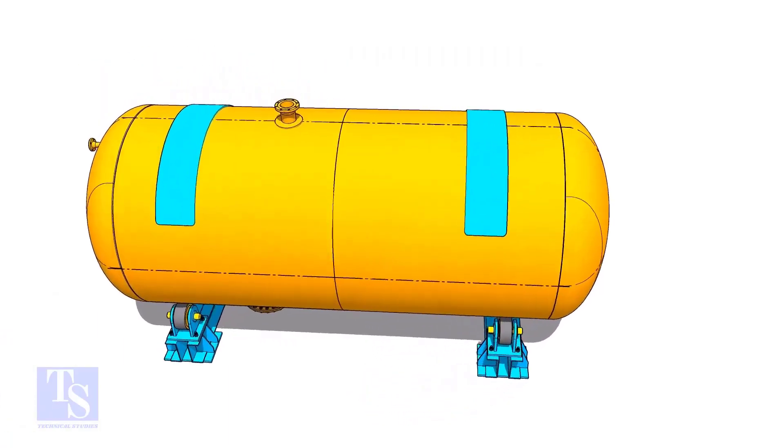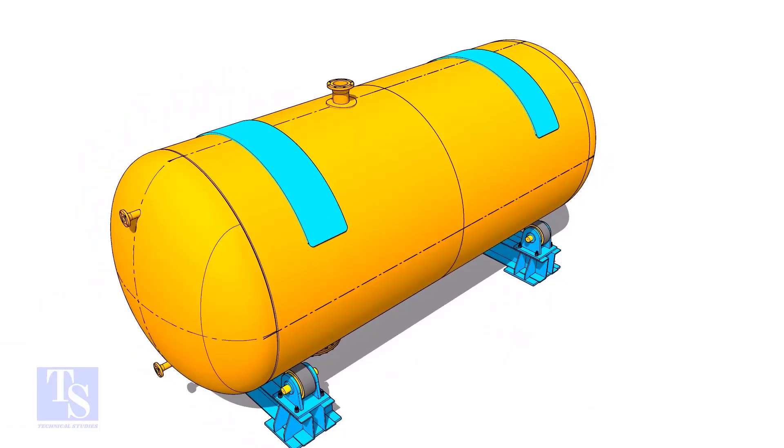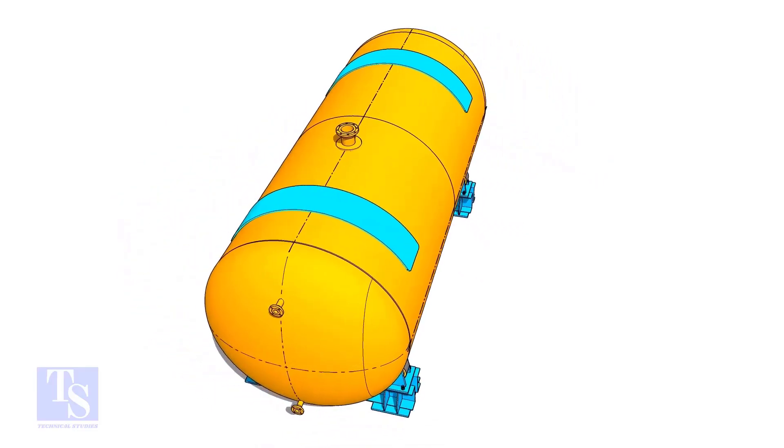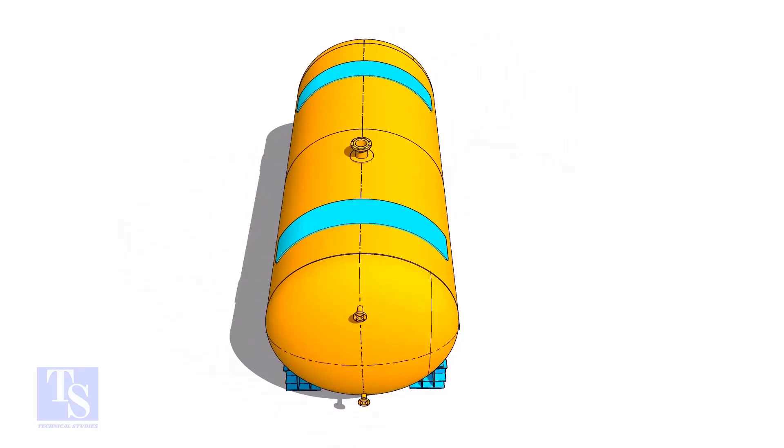Rotate the tank. Install the pad plate for the saddle support. Don't weld the pad plate before installing the saddle, because it may cause distortion to the tank.